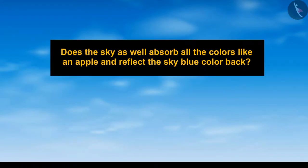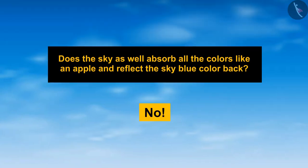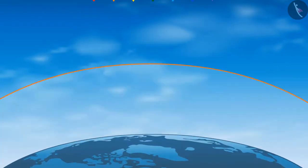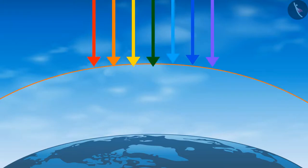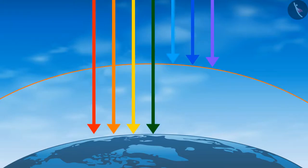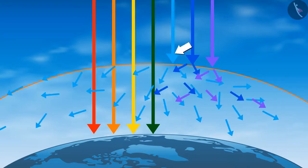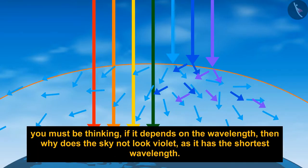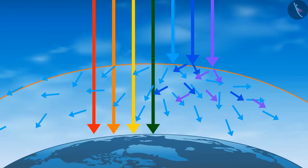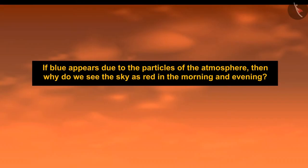The answer is no. When the seven colors enter the atmosphere, they pass through the molecules of air and tiny particles present in the atmosphere, which are comparable in size to the wavelength of light. These particles scatter the blue light, making the sky appear blue. Now you might wonder: if it depends on wavelength, why doesn't the sky look violet, since violet has the shortest wavelength?